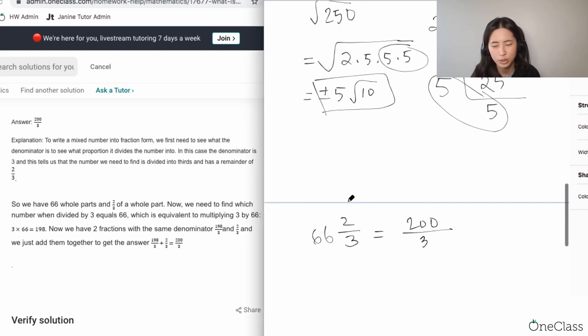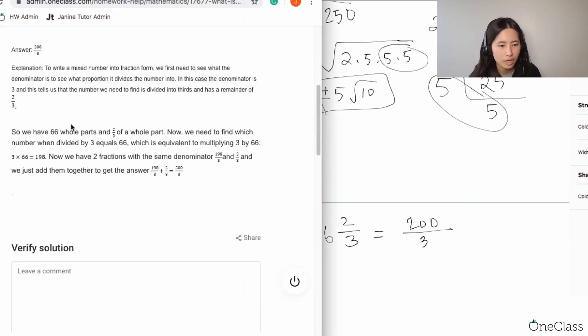Then it says we have 66 whole parts and 2 over 3 of a whole part. Now we need to find which number when divided by 3 equals 66.